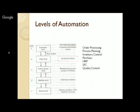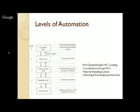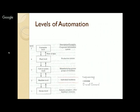At the plant level, we talk of planning the manufacturing: order processing, process planning, inventory control, purchase, material requirement planning, shop floor control, and quality control. Then at the cell or system level, we have part dispatching and machine loading, coordination amongst machines, material handling systems, and collecting and evaluating inspection data. At the machine level, automation pertains to sequencing, timing, and overall control.